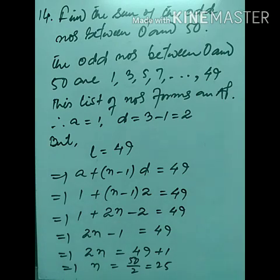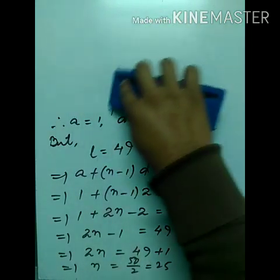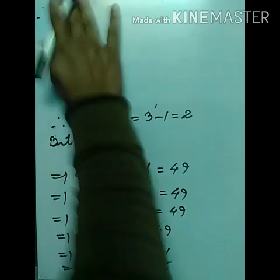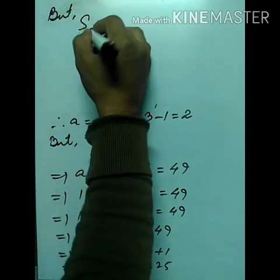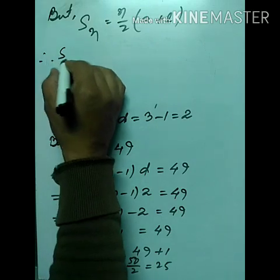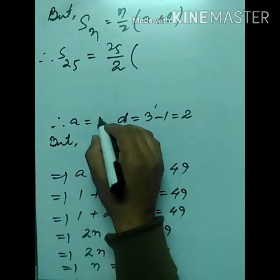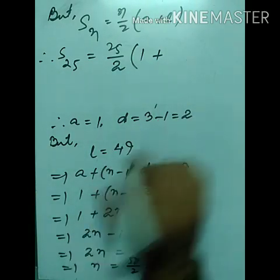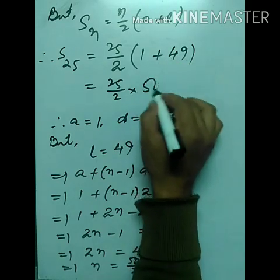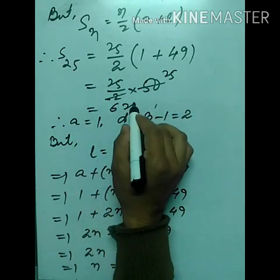We need to find S₂₅. Using Sₙ = n/2 × (first term + last term): S₂₅ = 25/2 × (1 + 49) = 25/2 × 50 = 25 × 25 = 625. The sum of odd numbers between 0 and 50 is 625.